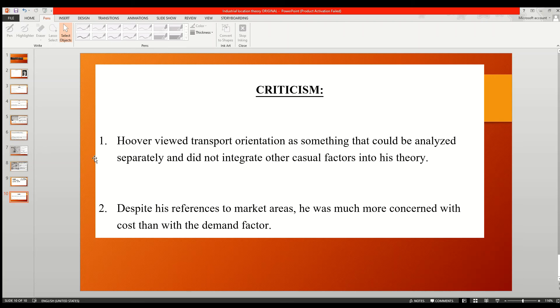Like every other theory, this theory has criticisms. Hoover viewed the transport orientation as something that could be analyzed separately and did not integrate other causal factors into his theory. We see the change in different patterns of transport. He considered this rise or variance or variation in transport in different cases, but it would be great if he considered them at the first case of his theory.